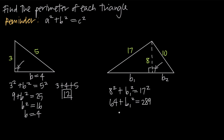When we subtract 64 from both sides, we're going to get B sub one squared is equal to 225. And then when we take the square root of both sides, we get B sub one is equal to the square root of 225, which is 15. So B sub one is equal to 15.